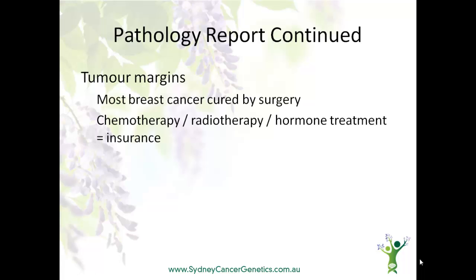One of the most important things on a pathology report, after deciding if the lump is a cancer, is whether or not it's all been removed. That's why the edges of the tumour are closely inspected to ensure that they're clear. In many cases, surgery is curative. However, as we still don't yet have the tools to determine which women may be at risk of a recurrence, chemotherapy and/or radiotherapy is often offered, unless the tumour is very small or very lazy.